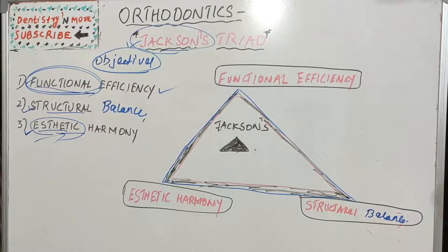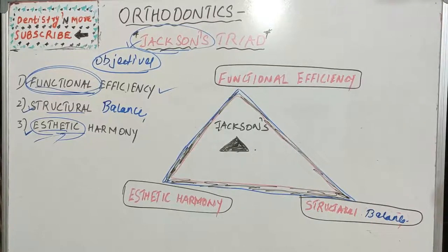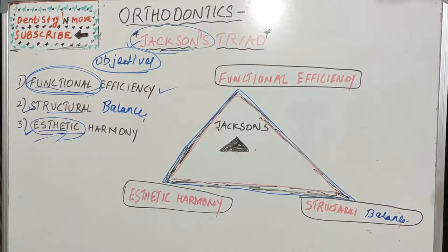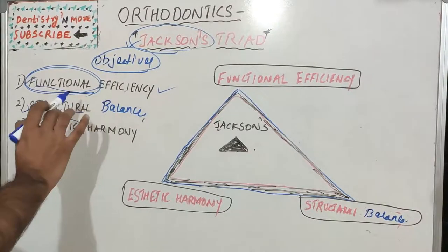Malocclusion affects the normal functioning of the stomatognathic system, so we should always aim at improving the functionality of the orofacial apparatus. The orofacial apparatus includes teeth, bone, and musculature — the lip muscles, cheek muscles, and other muscles present within the oral cavity. There should be a proper balance of the orofacial apparatus — that is functional efficiency.